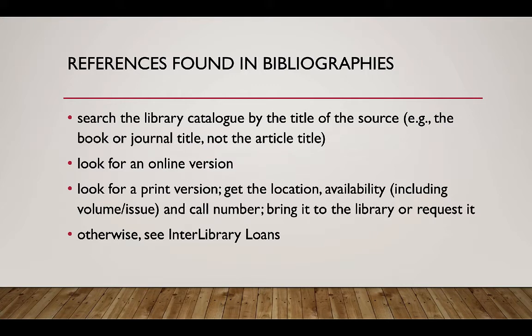For references found in bibliographies, search the library catalog by the title of the source — for example, the title of the book or the journal — and look for a link to the online version. If there is no online version, look for a print version. If you find a print version, get the location, the availability including available volume and issue numbers if applicable, and the call number. Bring this information to the library or request the item through the library catalog. If you can't find the item in the library catalog, you can request it through interlibrary loans.